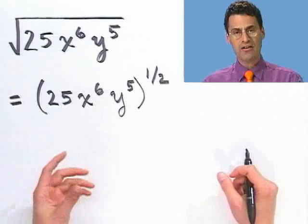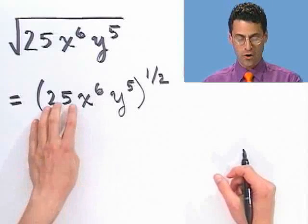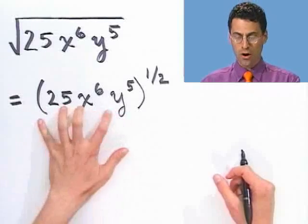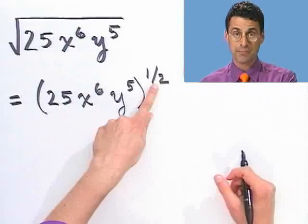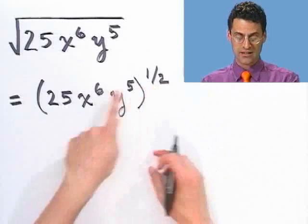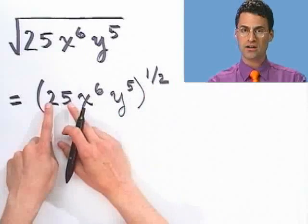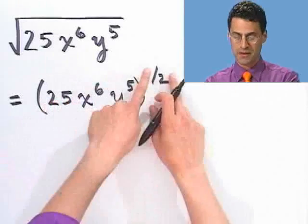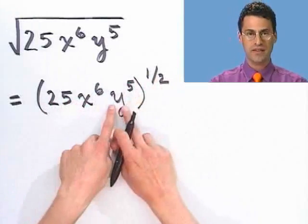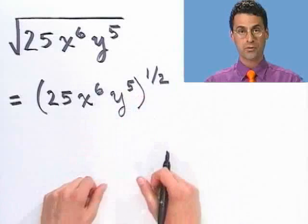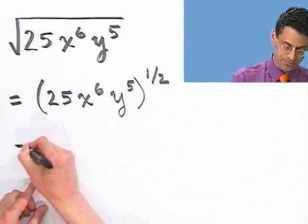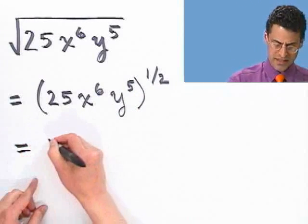Now I remember that if I have a bunch of different things all raised to the same power, one of the laws of exponents says I can do it à la carte — take each factor to that power and multiply them together.